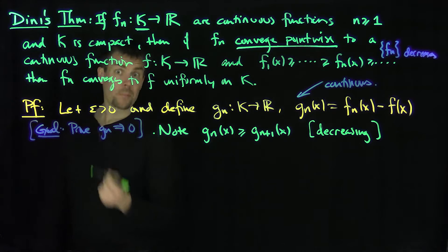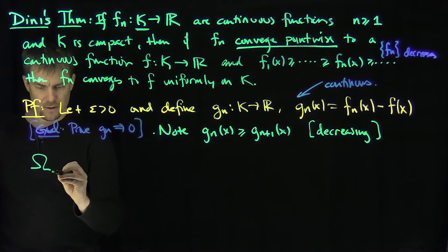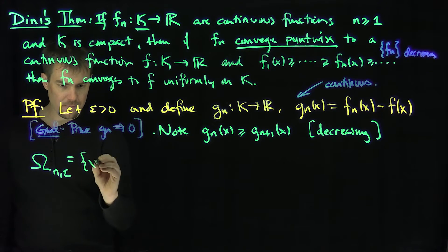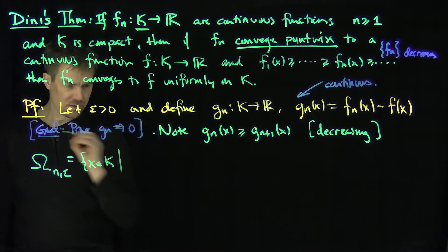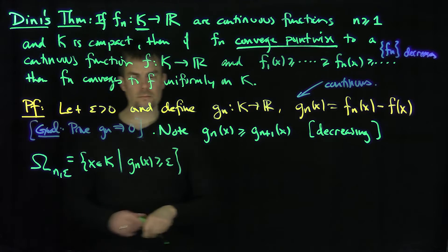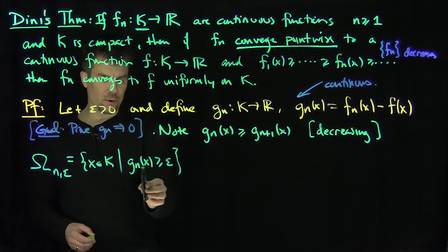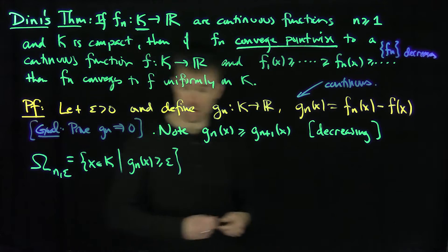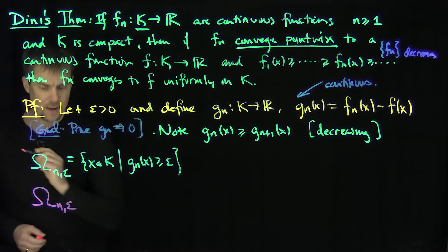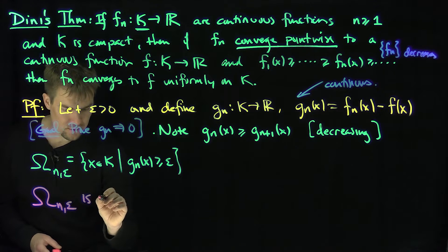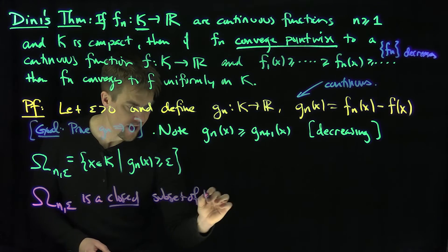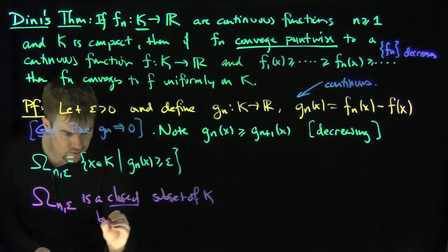Now define sets omega_n of epsilon to be the set of x in k such that g_n of x is bigger than or equal to epsilon. This is the set where g_n is at least epsilon, so this is a closed subset of k, closed by the continuity of g_n.